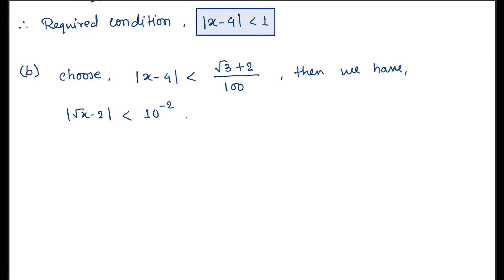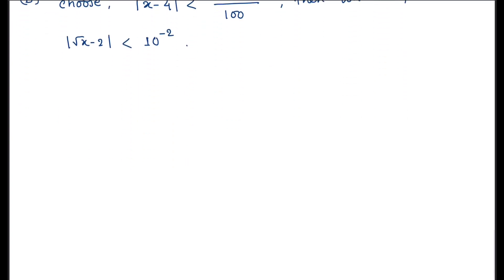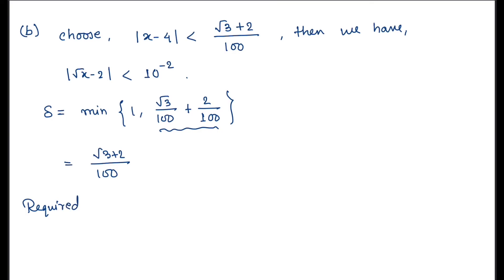Again, we chose |x - 4| < (√3 + 2)/100 here, and earlier we chose |x - 4| < 1, so we take the minimum. Delta = min(1, (√3 + 2)/100). Clearly (√3 + 2)/100 is the smaller value, so the required condition is |x - 4| < (√3 + 2)/100.